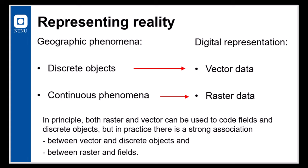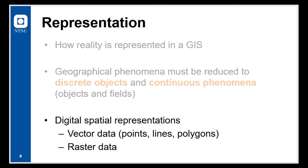In the environment around us, there are several geographical phenomena. But for these to be able to be represented in a GIS, we need to be able to conceptualize these as either discrete objects or continuous phenomena. In principle, both raster and vector can be used to code fields and discrete objects. But in practice, there is a strong association between vector and discrete objects and between rasters and fields. So the two main strategies in digital spatial representations are therefore vector data, which is points, lines and polygons, and raster data.